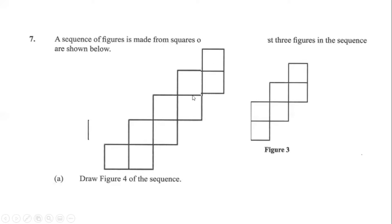Counting the squares: 1, 2, 3, 4, 5, 6, 7, 8, 9. Based on the sequence pattern, we knew that figure 4 would have 9 squares, and this is our figure 4.